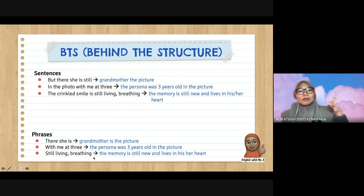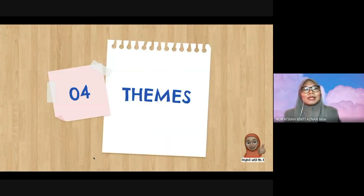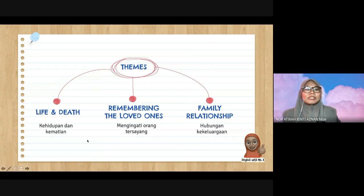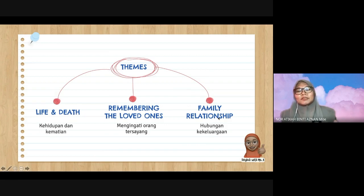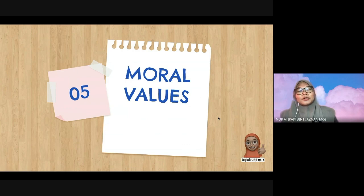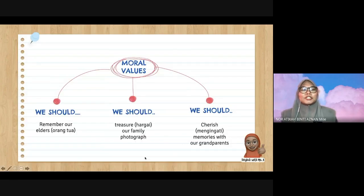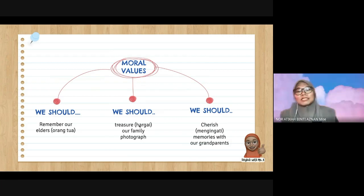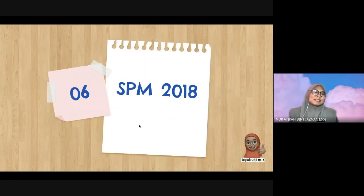The themes: first, life and death — kehidupan dan kematian. Second, remembering loved ones — mengingati orang tersayang. Third, family relationship — keluargaan. The moral values: we should remember our elders. We should treasure our family photographs — kita patut hargai gambar keluarga. We should cherish memories with our grandparents — kita patut mengingati memori bersama atuk dan nenek kita.